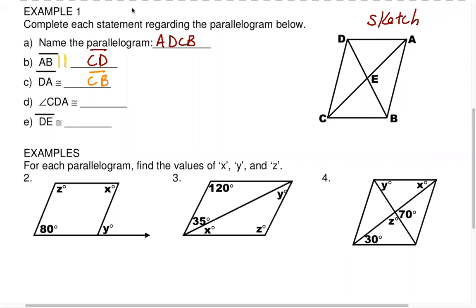Part D says angle CDA is congruent or the same measure as what? The middle letter is a tip-off to where the vertex point is. Tracing C to D and D to A indicates vertex D, which is in this corner. We learned that opposite angles are congruent, so angle CDA is congruent to the angle at the opposite corner.